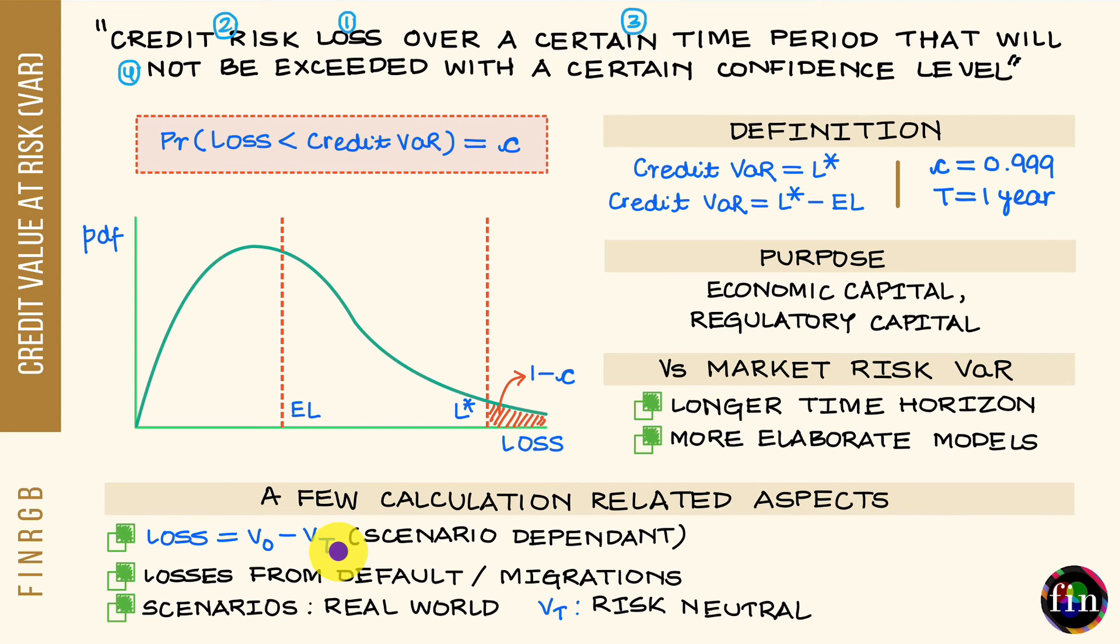Since we are not here focusing on market risk VAR, but rather credit risk VAR, calculation of this V sub capital T has to properly account for losses which come from default of your counterparty and to make things more accurate, not just default, but also migration of your counterparty to worse off credit ratings. Downgrades of your counterparty to worse off ratings.